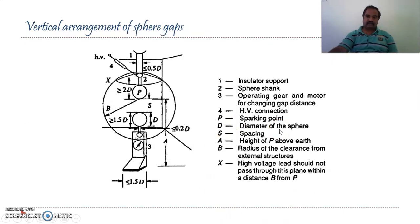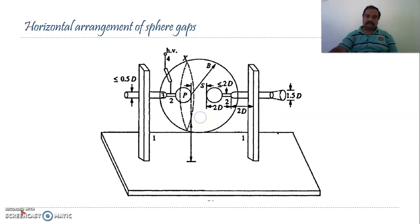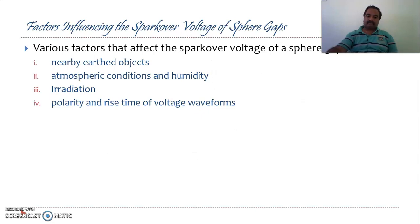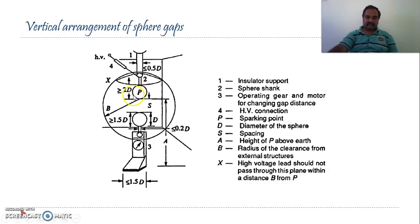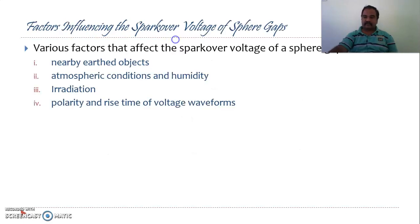This is the vertical arrangement of the sphere gaps — you are supposed to replicate the same when asked in an examination, noting the specifications clearly. This is the horizontal configuration. Looking at the diagram: these are the two spheres, and these are called the sphere shanks. This is the operating gear, which consists of a motor for changing the separation between the electrodes. This is the high voltage terminal through which high voltage is applied to the top sphere. P indicates the sparking points, where the spark starts.